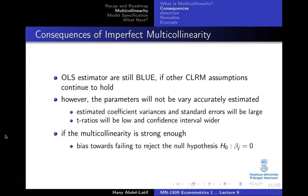Now let's look at imperfect multicollinearity. Within imperfect multicollinearity, the OLS estimator is still BLUE, provided the other assumptions are still valid. But the problem is that the parameters will not be very accurately estimated. This might have implications for the T-ratios and the confidence intervals. If the multicollinearity is strong enough, this will result in a bias toward failing to reject the null hypothesis that β_j equals zero.